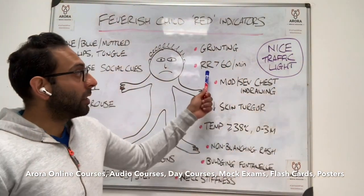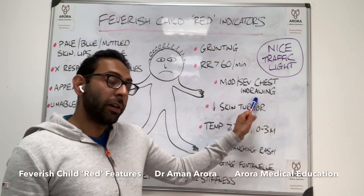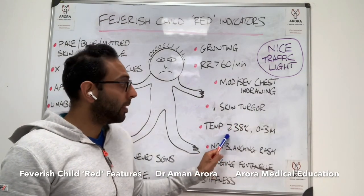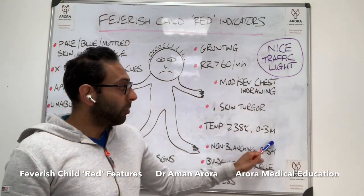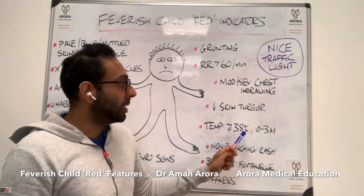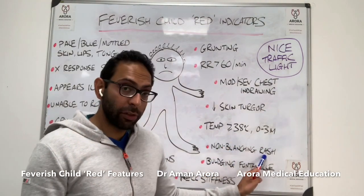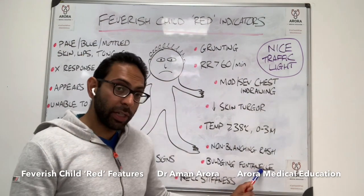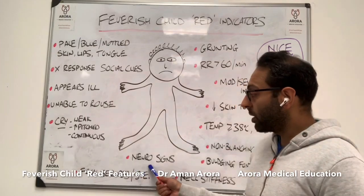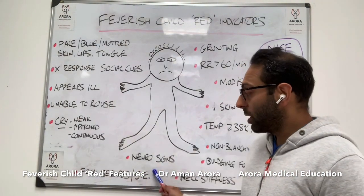Grunting. Respiratory rate over 60 breaths per minute. Moderate or severe chest in-drawing. Decreased skin turgor. A temperature equal to or greater than 38 degrees Celsius in ages zero to three months — remember your amber looks at a slightly older age, but zero to three months, a temperature of 38 degrees or more is a red feature. Non-blanching rash, bulging fontanelle, neck stiffness, and then neurological signs — focal neurological signs, focal seizures, or status epilepticus.